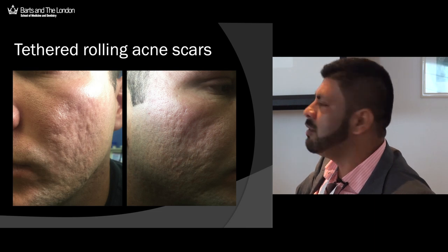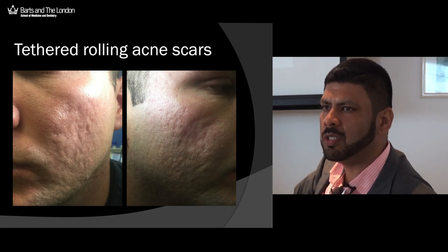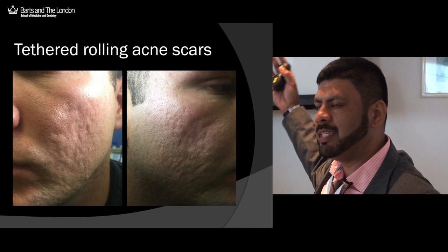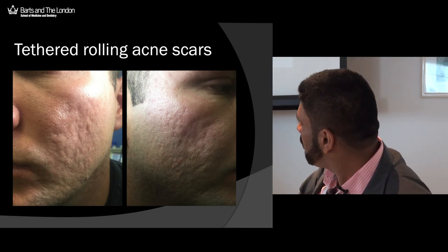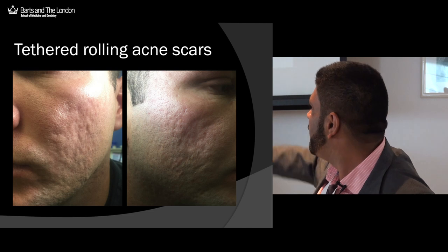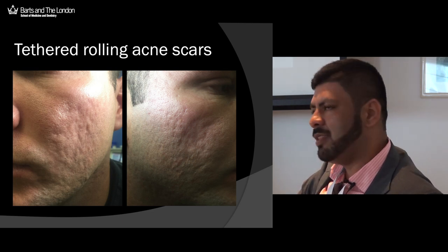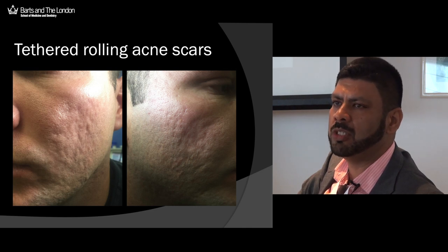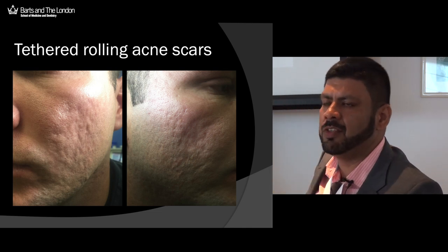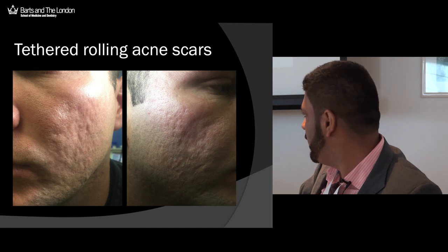This gentleman had tethered rolling acne scars — the first case we did using tumescent anaesthesia subcision with fractional laser. The lighting is at an angle to appreciate the relief of the scars. About six to seven days down the line, it's still a little edematous, but those scars have popped out quite nicely with the subcision alone. The advantage of tumescent is you can go straight over afterwards with your fractional laser, and the subdermal plexus gives a good anastomotic link, so even if the tools knock out a few perforator vessels you still get reasonably good skin healing.